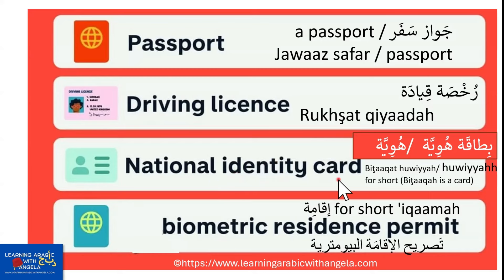National identity card. Card is bitaqa and an ID is called huwiyya. Huwiyya comes from huwa, which literally means 'he,' so it identifies someone. We can say bitaqatu huwiyya — an identity card.